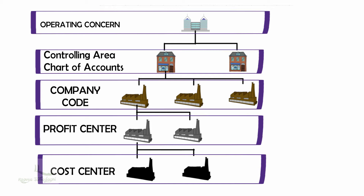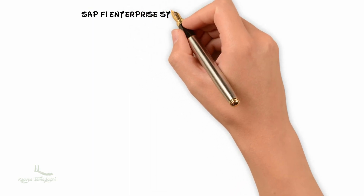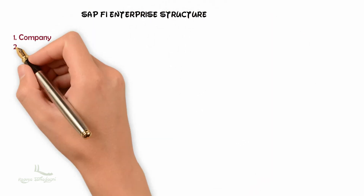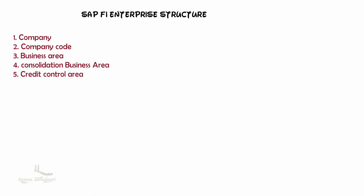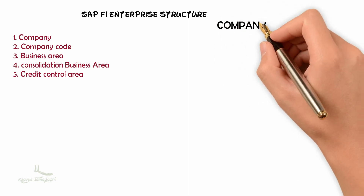So that was an overview of Enterprise Structure with SAP FI and CO combined. Since in this course we are learning from the SAP Financial Accounting perspective, we will define five organizational units: Company, Company Code, Business Area, Consolidated Business Area, and Credit Control Area. Let's take the first organizational unit — Company.